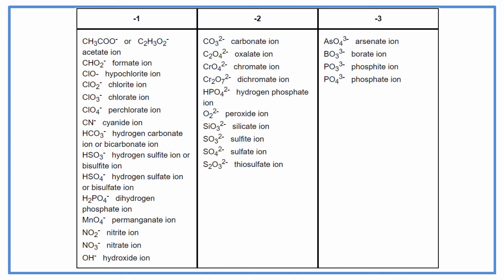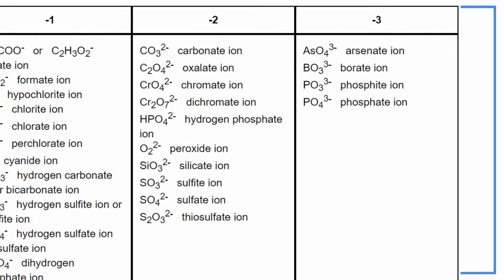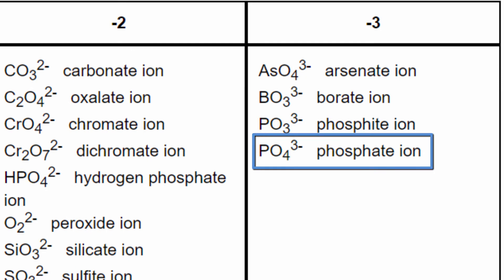As we look through the table, we can see that in the third column we have the phosphate ion, PO4 3- minus, so PO4 is called phosphate, and in this case we just ignore the minus 3.